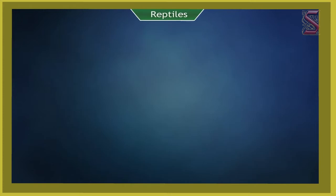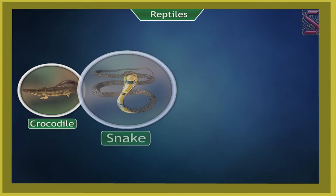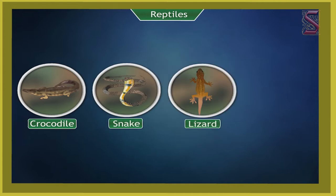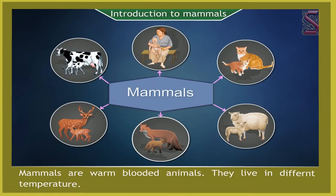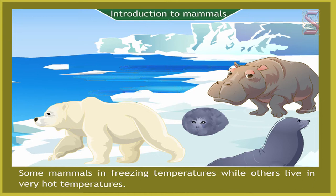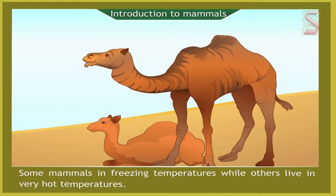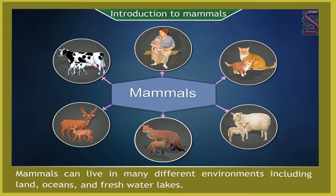Some examples of reptiles are crocodile, snake, lizard, and tortoise. Introduction to mammals: mammals are warm-blooded animals. They live in different temperatures. Some mammals live in freezing temperatures while others live in very hot temperatures.